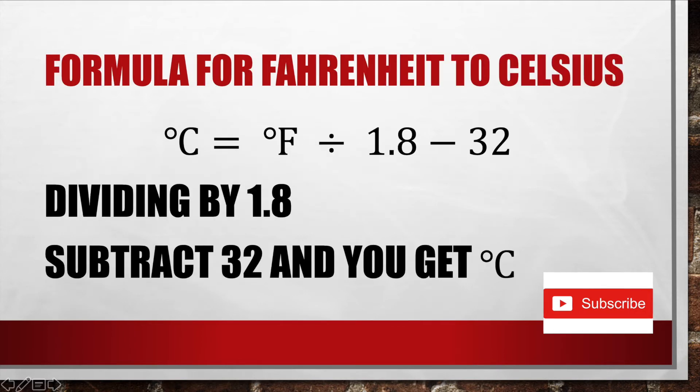Here's the formula for Fahrenheit to Celsius. Celsius equals Fahrenheit minus 32, divided by 1.8. So, subtract 32, divide by 1.8, and you'll get Celsius.